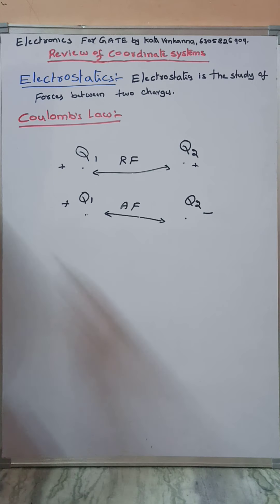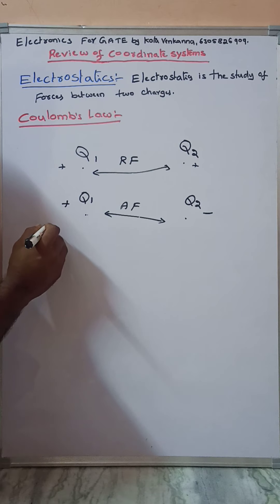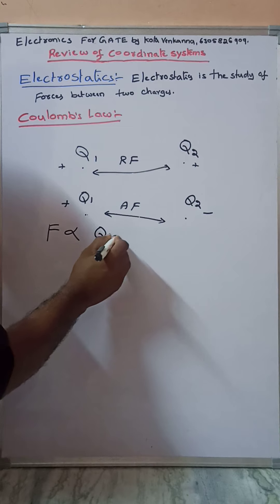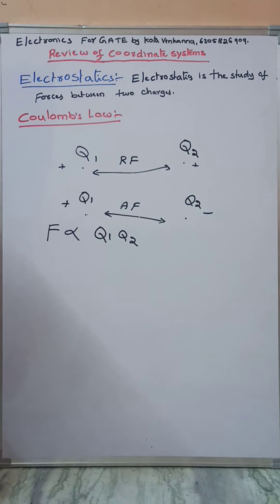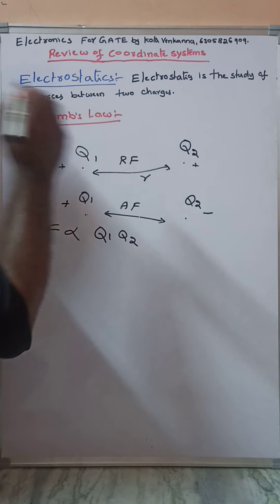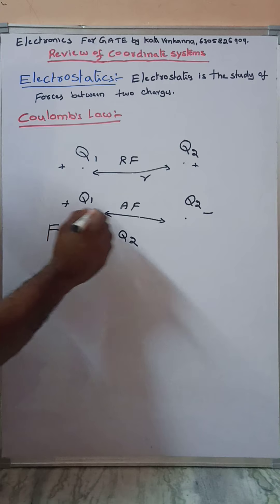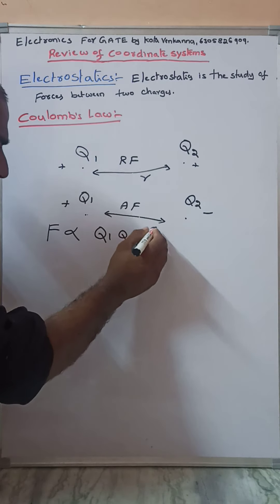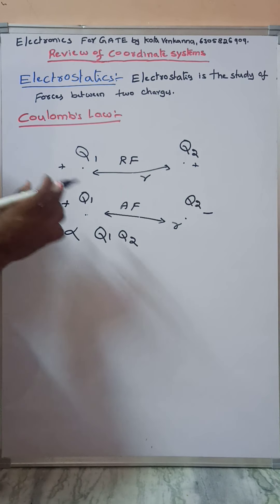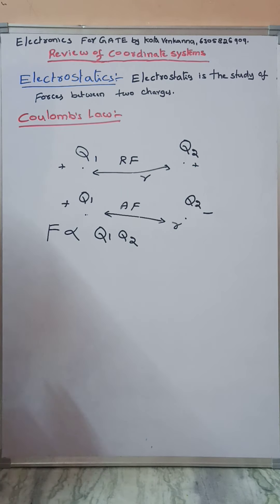The force between any two charged bodies is directly proportional to Q1 times Q2. The distance between Q1 and Q2 is indicated with R, and the force between these two charges is inversely proportional to R squared.